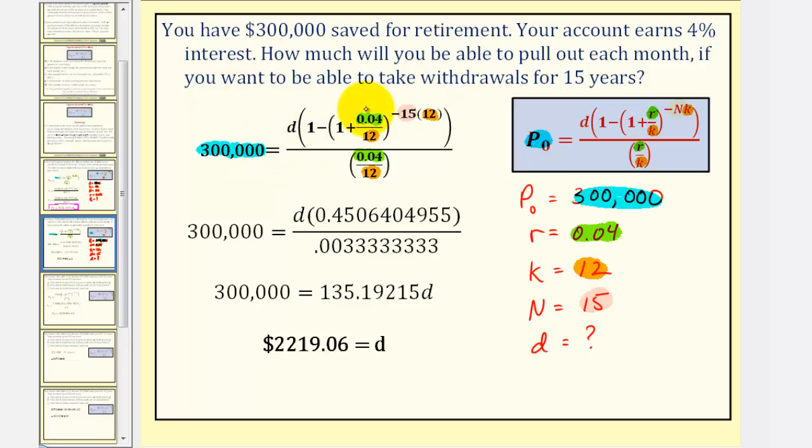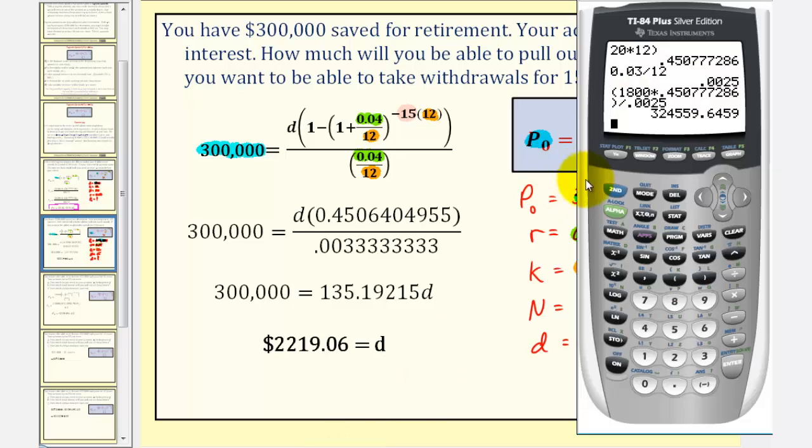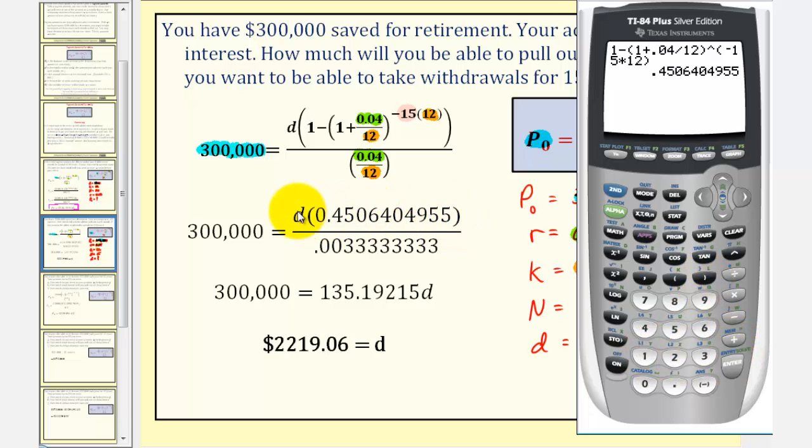Notice here we're solving for D, so we'll first evaluate the parentheses in the numerator and denominator, and then solve for D. Starting with the numerator, we'd have 1 minus the quantity (1 + 0.04/12), raised to the power of negative 15 times 12.